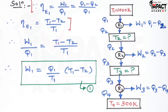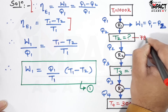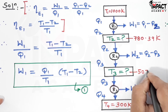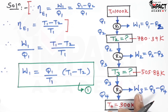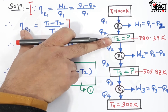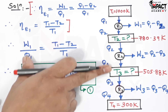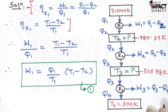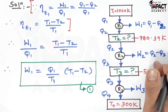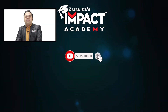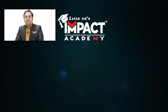The intermediate temperatures are T2 = 780.39 Kelvin and T3 = 505.88 Kelvin. The temperatures decrease continuously from source to sink: each engine's sink becomes the source for the next, going from 1000 Kelvin down to 300 Kelvin. These intermediate values lie within those limits, which is the expected result for this second law of thermodynamics problem.